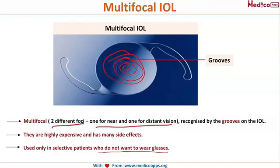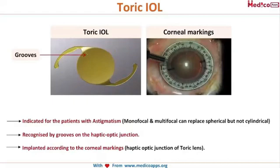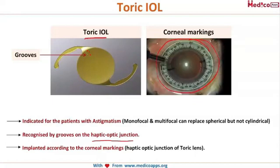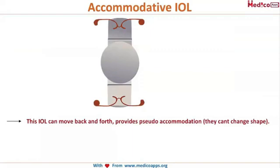For patients with astigmatism, a toric IOL can be used. It has markings — three dots — at the haptic-optic junction indicating the axis of the lens, which is used to determine the exact degree and axis of astigmatism for proper implantation. The accommodative IOL is a moving IOL that can shift back and forth to provide pseudo-accommodation, similar to the natural lens, moving forward and backward depending on accommodation needs and also changing shape.